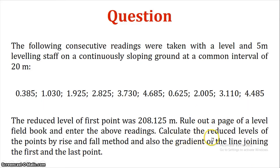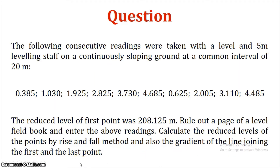We are going to calculate the reduced levels of the points by rise and fall method, and also calculate the gradient of the line joining the first and last point. The gradient is the slope of the line connecting those two points.